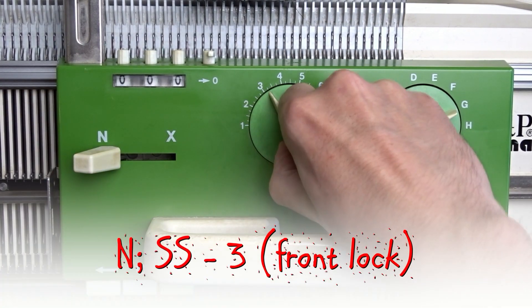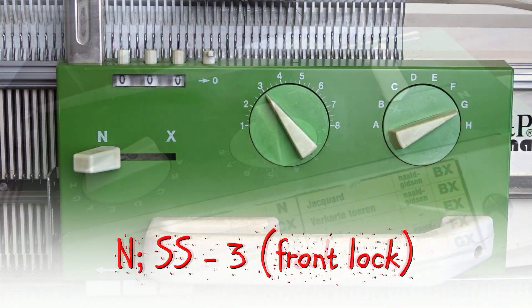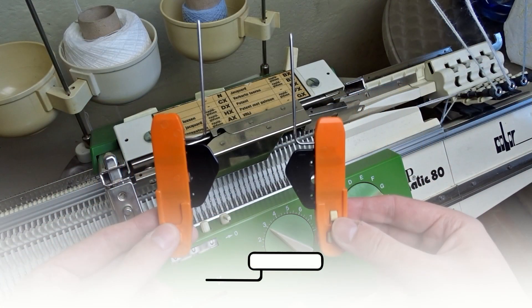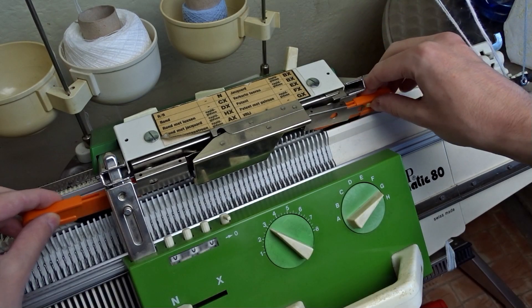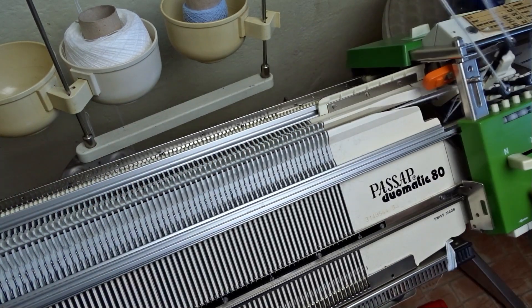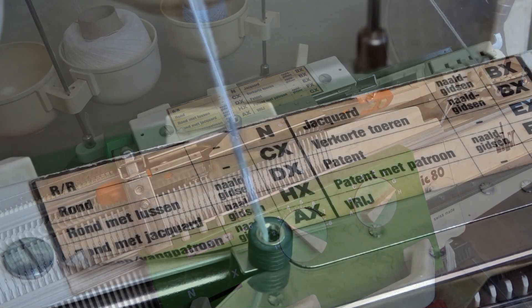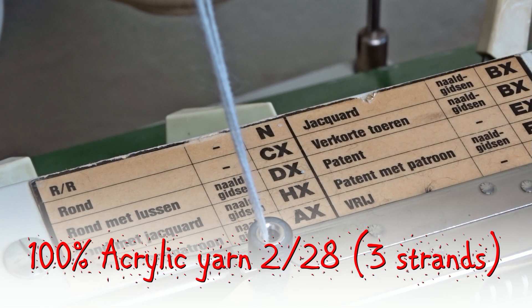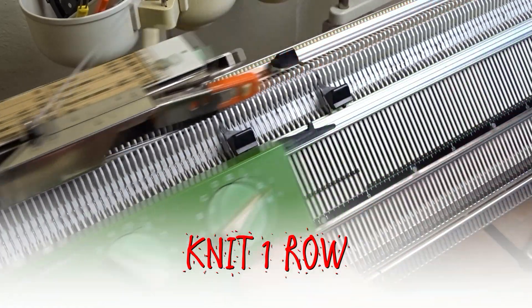Set both locks to N and the stitch size to 3. Insert the orange strippers and take the yarn. I will use 3 strands of acrylic yarn. Knit the zigzag roll.